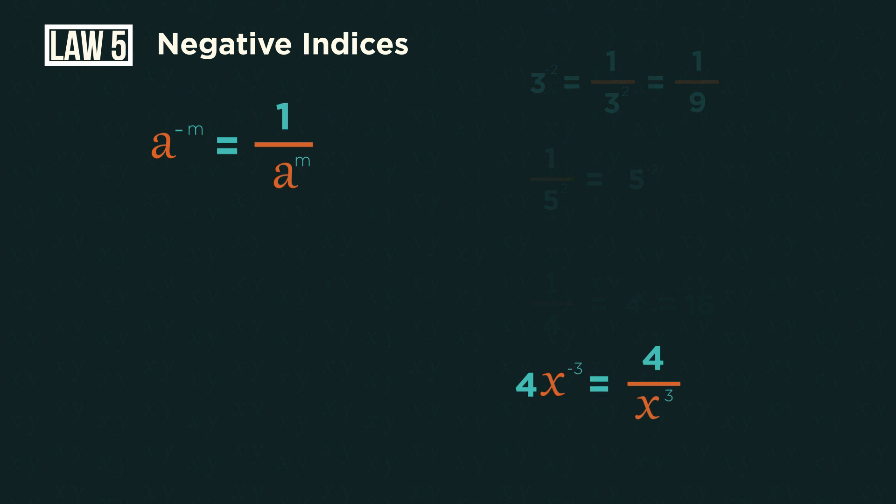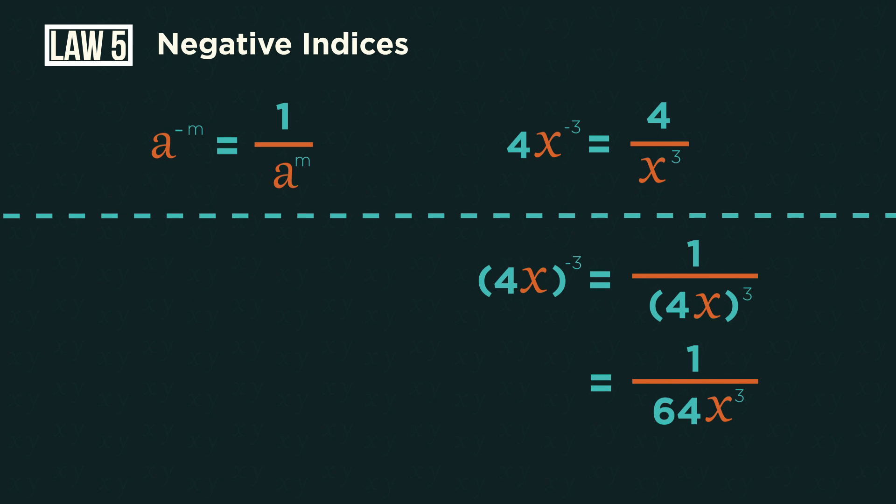See how on the fourth one, only the x to the negative 3 drops down. This is because the negative 3 only belongs to the x. We would need brackets for it also to affect the 4.